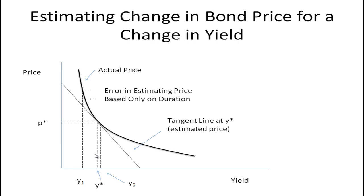On the other hand, if you have a larger change in yield — perhaps 200 basis points, two percent — you can see that the line would predict one price for the bond when the actual price is different, so you have this error. If you use only duration to estimate the change in the bond's price for a big change in interest rates, you're going to be off by quite a bit. But if you use the concept of convexity you can make an adjustment and get a better estimate.